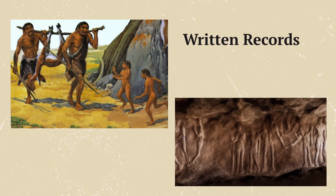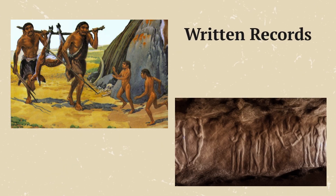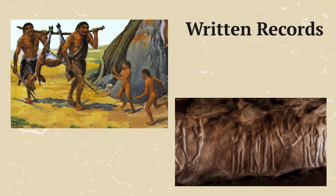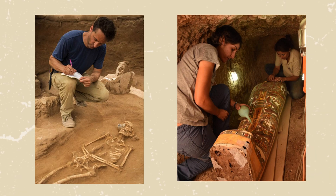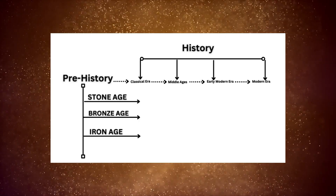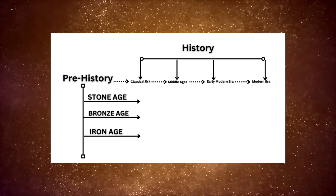Historians rely on written records and archaeological evidence to understand more about human history. They use these resources to divide human existence into five main historical eras: prehistory, classical, middle ages, early modern, and modern eras.